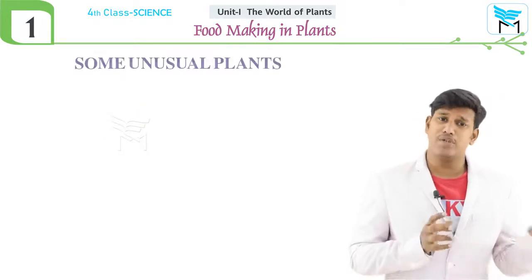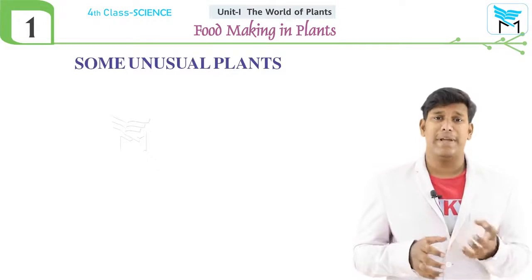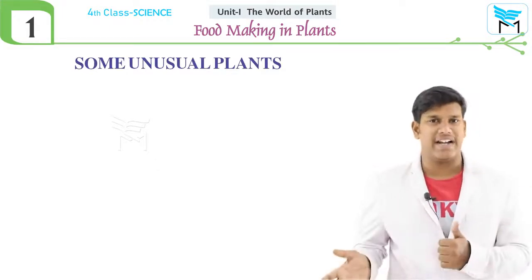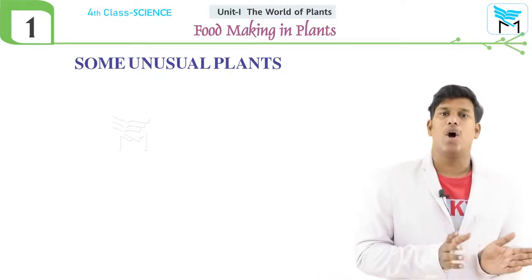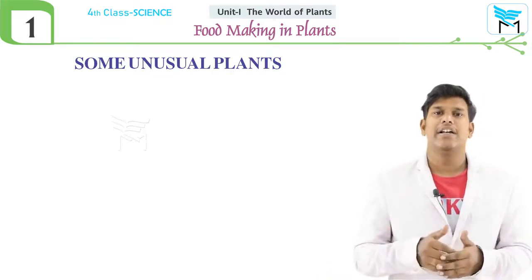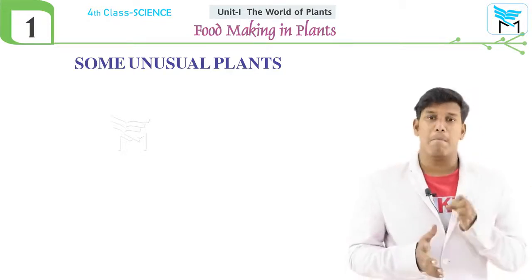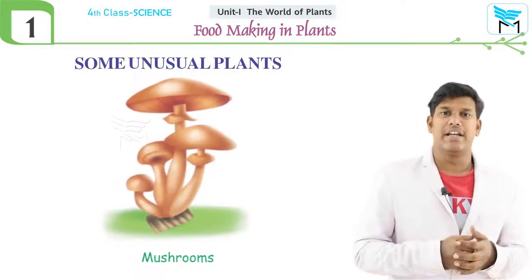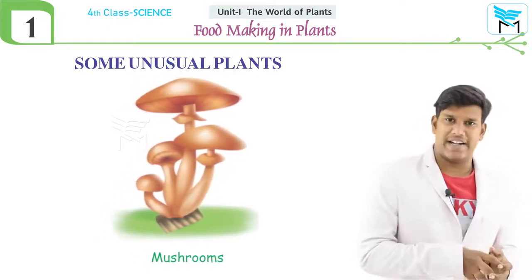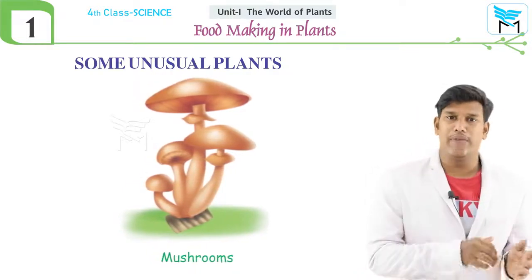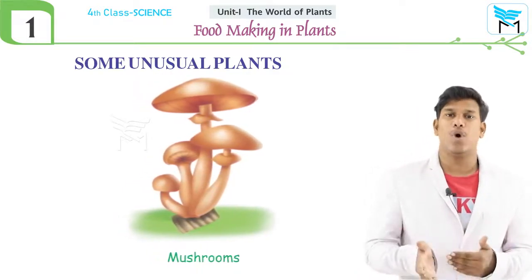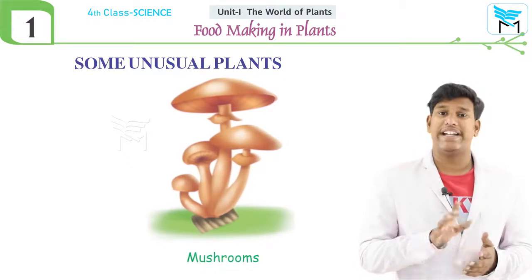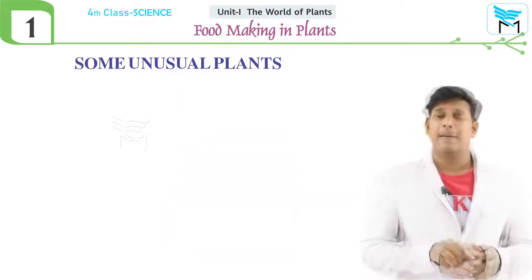Now let us discuss some unusual plants. Unusual plants are plants that do not appear as typical plants — they are not like the plants you usually see. Have you ever seen a mushroom? Mushrooms are mostly found near rain. These mushrooms are also plants, but they cannot prepare their own food. They depend upon dead and decaying plants and animals for their food.